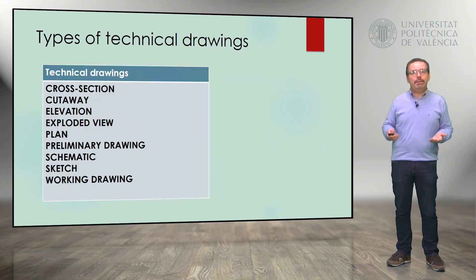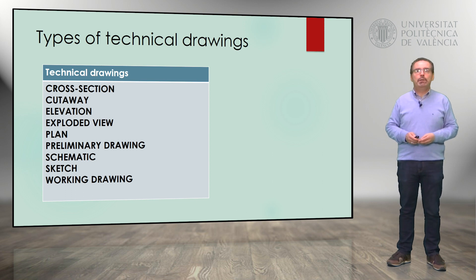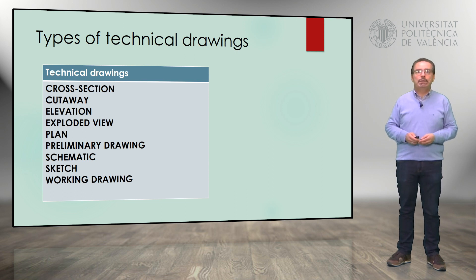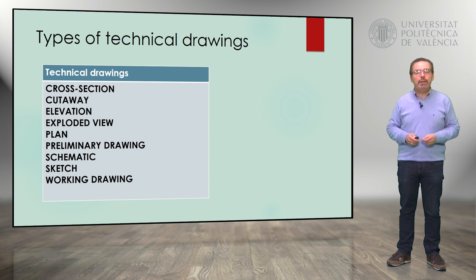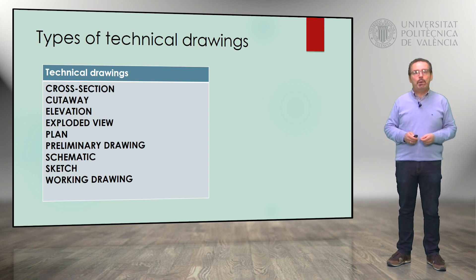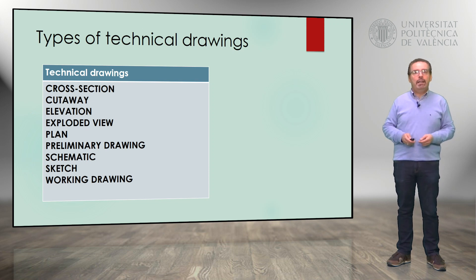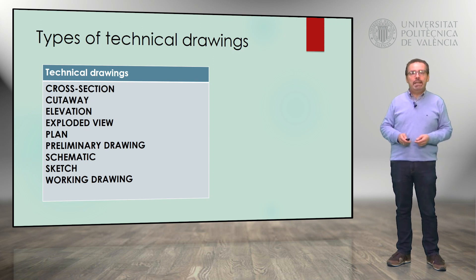We will have a look at the different types of technical drawings — the most important types: cross-section, cutaway, elevation, exploded view, plan, preliminary drawing, schematic, sketch, and working drawing. We will have a look at them next.